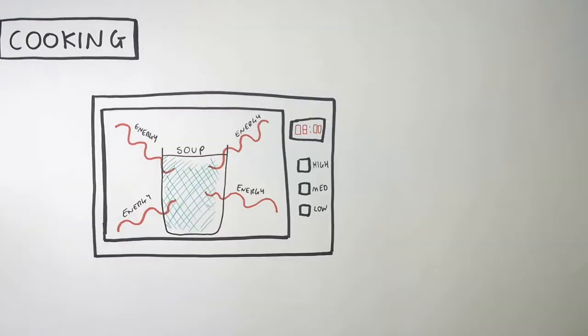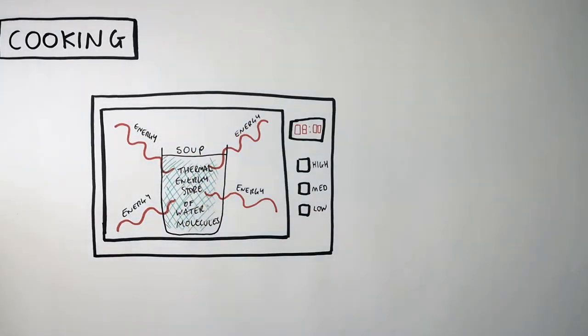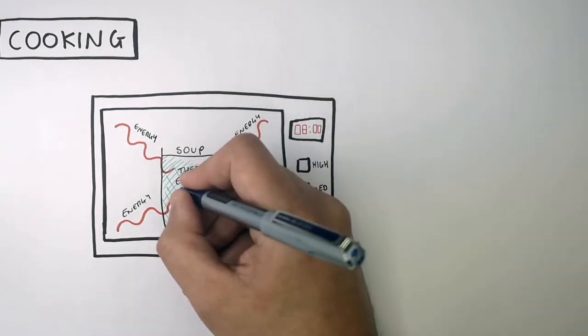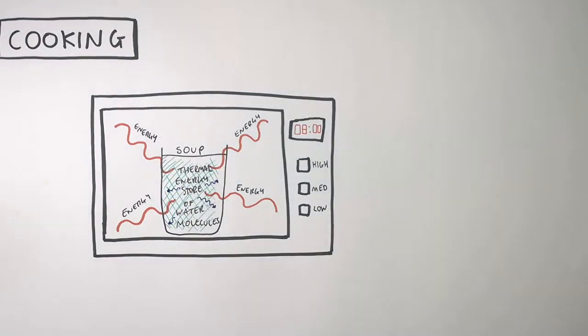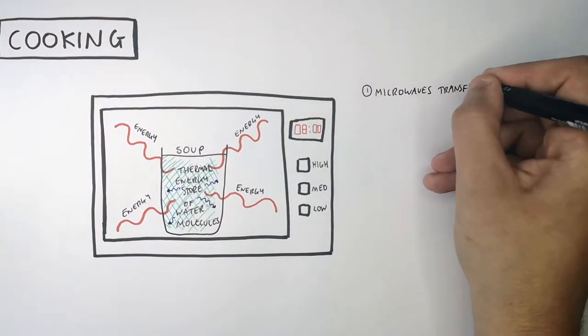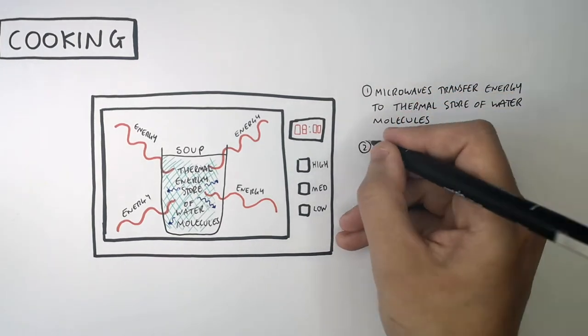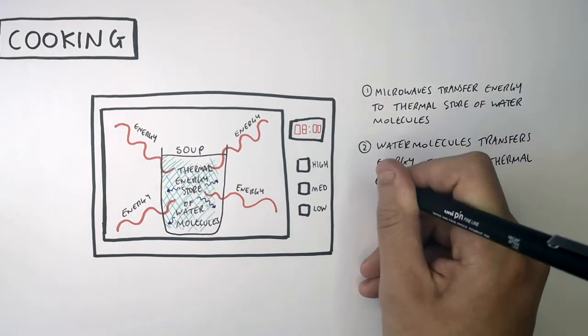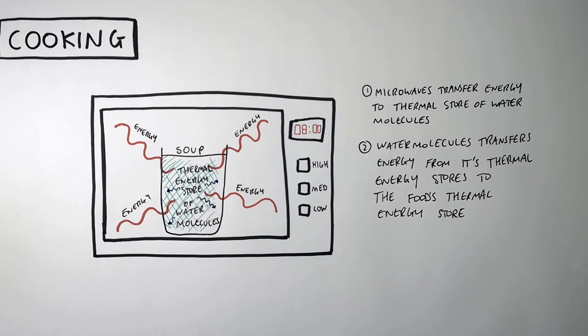So the energy is transferred to the thermal energy store of the water molecules, and then the water molecules are going to transfer the energy from its thermal store to the thermal store of the food. So remember, microwaves transfer energy to a thermal store of water molecules. The water molecules transfer energy from its thermal energy stores to the food's thermal energy stores. That causes the temperature of the food to increase.